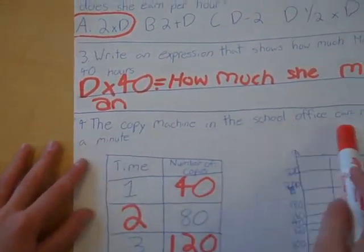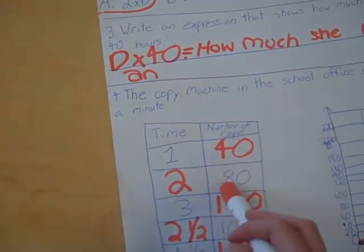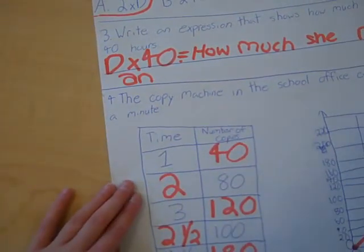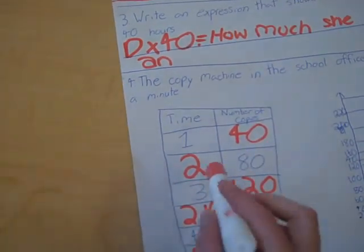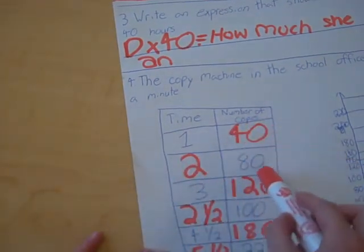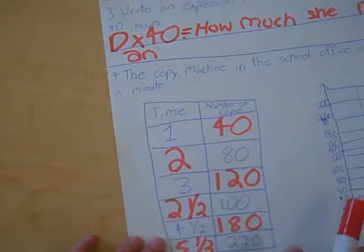The copy machine in the school office can make 40 copies a minute. So it can make 40 copies a minute, that would be 40, and 2 minutes, you would have to times that by 2, so you would do 2 times 80, and 3 for 120.